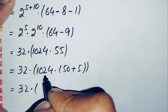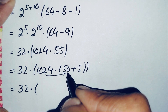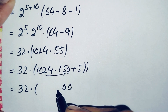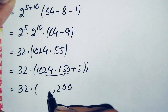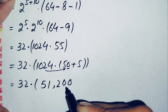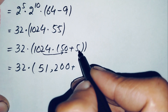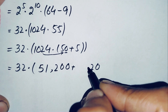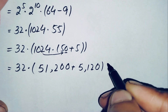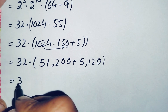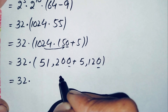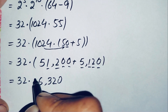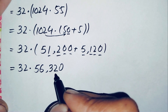32 stays the same. Multiplying 1024 times 50: 1024×0=0 and 1024×5=5120, so this gives 51,200. Then multiplying 1024 times 5: 5×4=20, carry 2; 5×2=10 plus 2=12, carry 1; 5×0=0 plus 1=1; 5×1=5; so this gives 5,120. Adding 51,200 plus 5,120 gives 56,320.